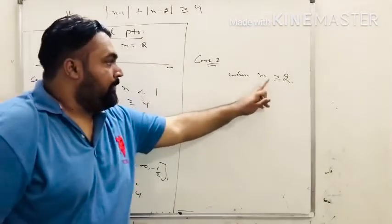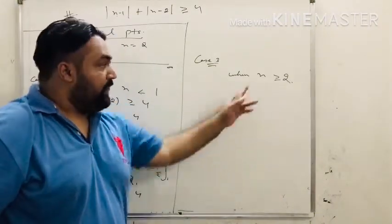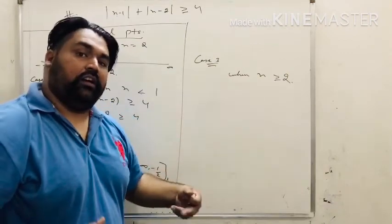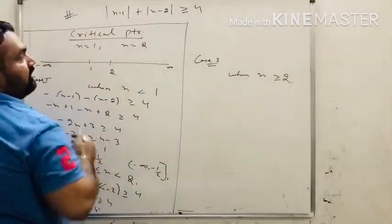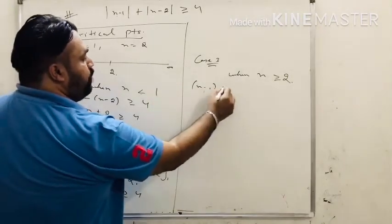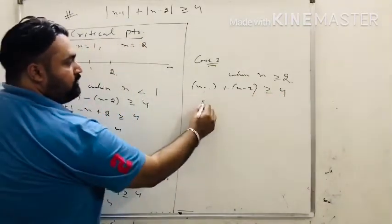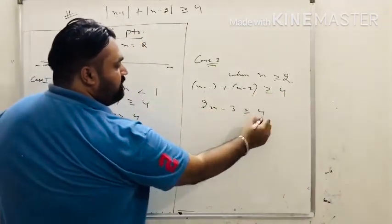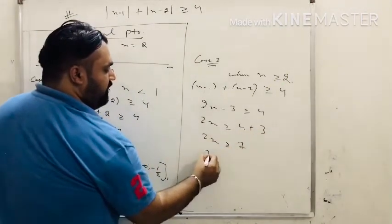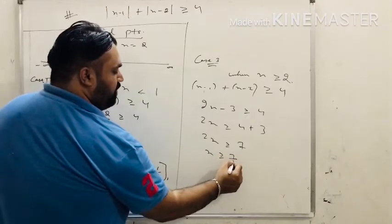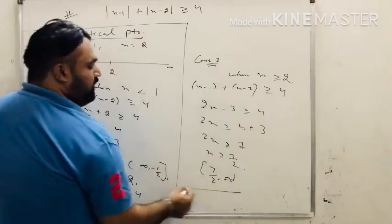Case 3: x is greater than or equal to 2. If x is greater than or equal to 2, it is also greater than 1, so both modulus values are positive. We get x minus 1 plus x minus 2 greater than or equal to 4. So 2x minus 3 greater than or equal to 4, giving 2x greater than or equal to 7, so x greater than or equal to 7/2. The answer is 7/2 to infinity.